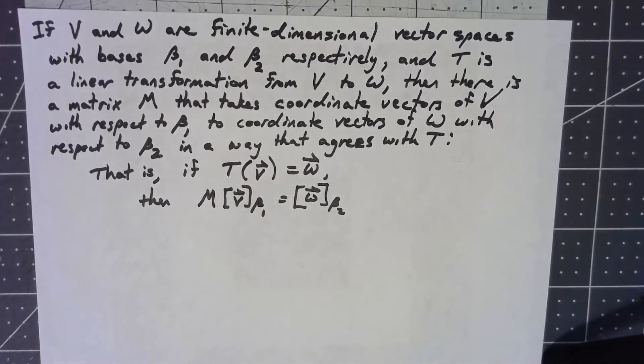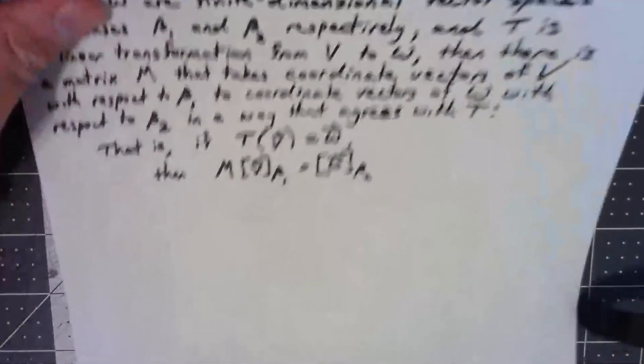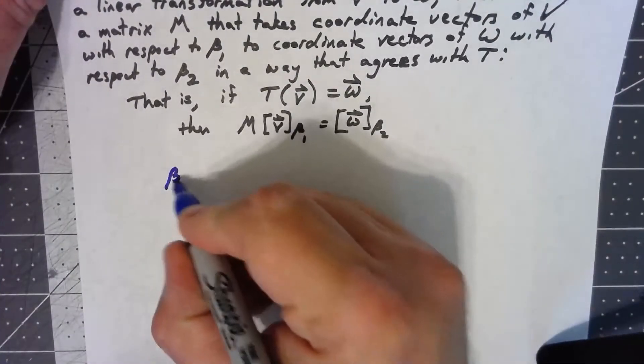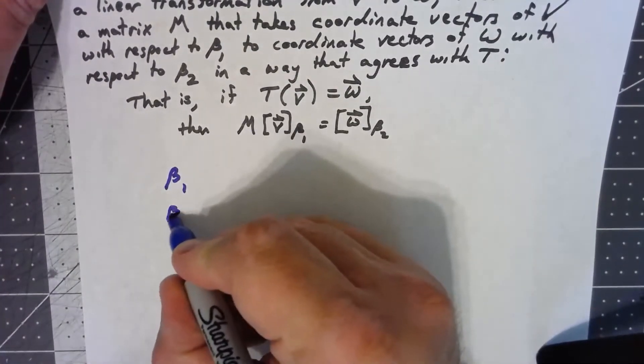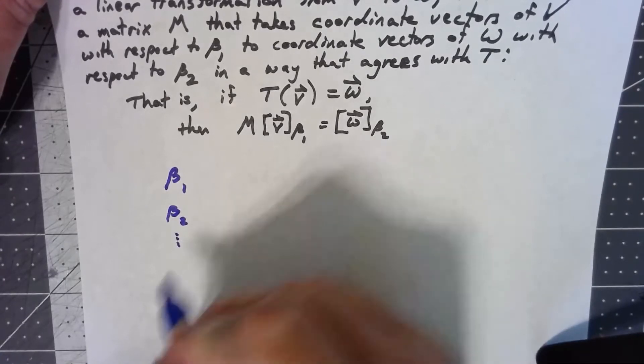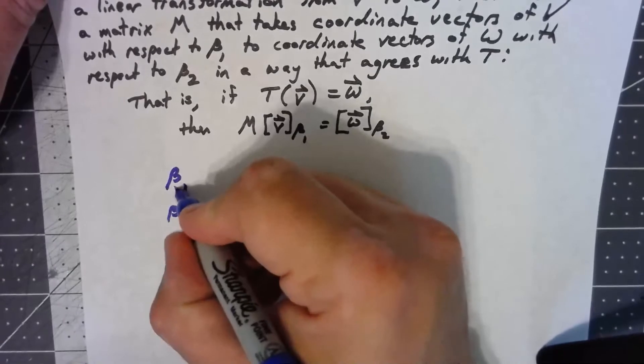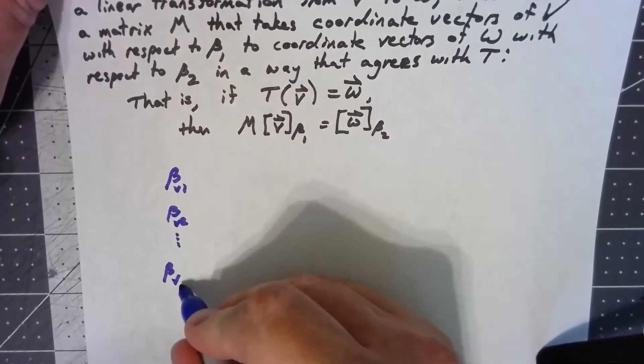Now I'm not going to do a very formal proof here, but honestly just understanding the way this works is almost a proof as it is. So let's go ahead and say we've got basis vectors beta 1, beta 2, up to beta n. Let's call these V1, V2, up to Vn.